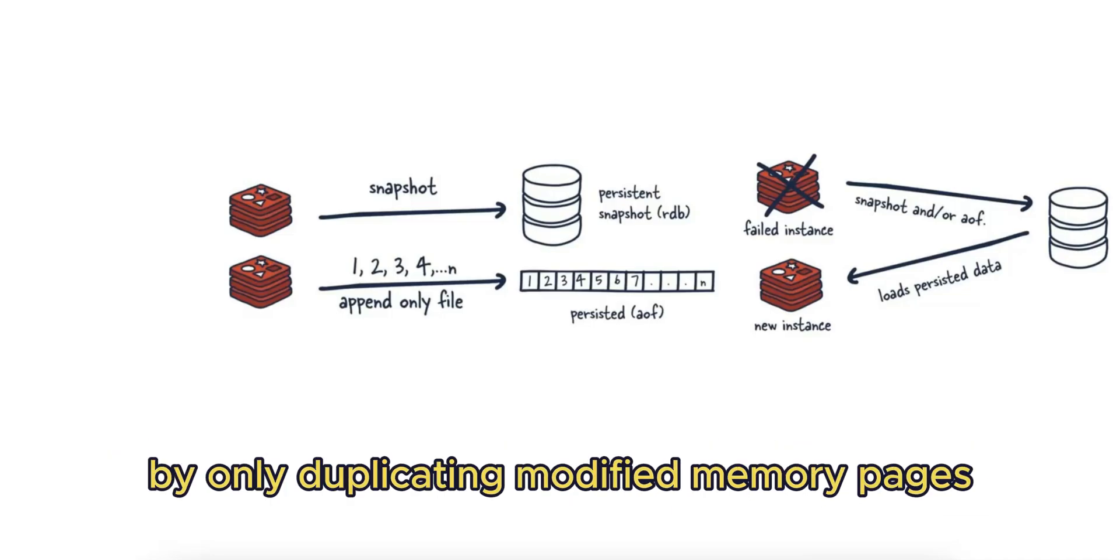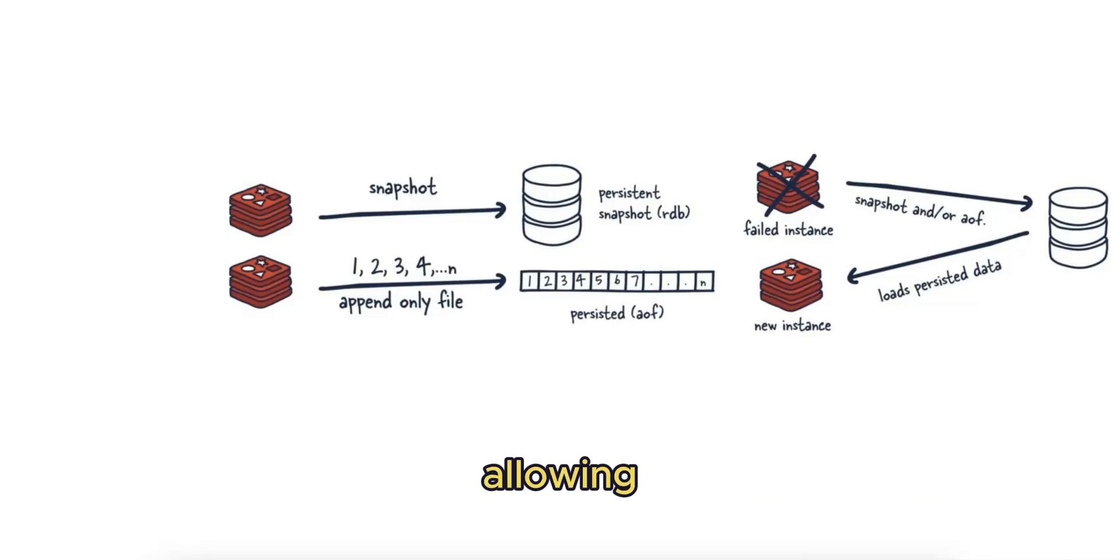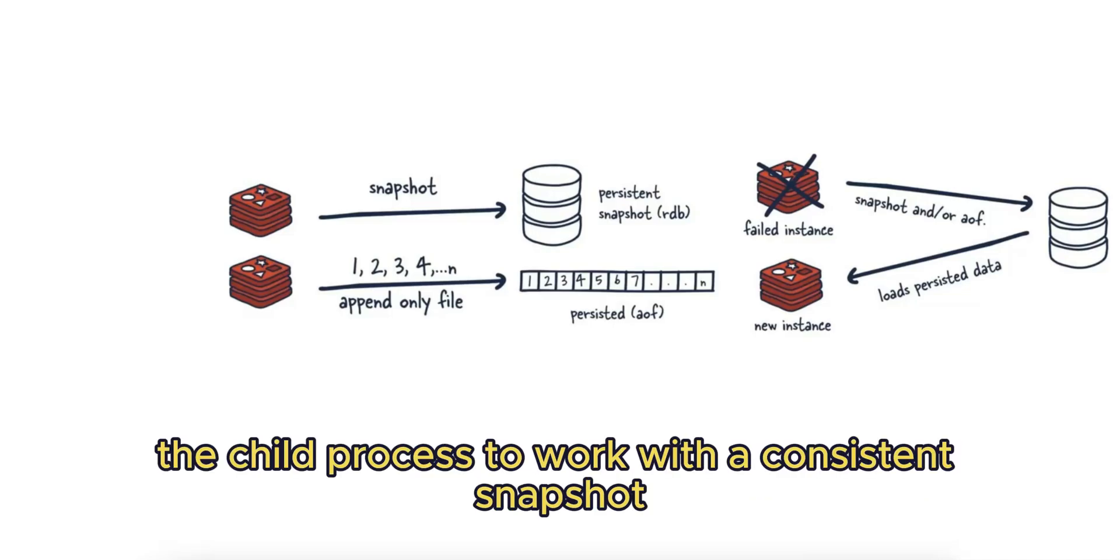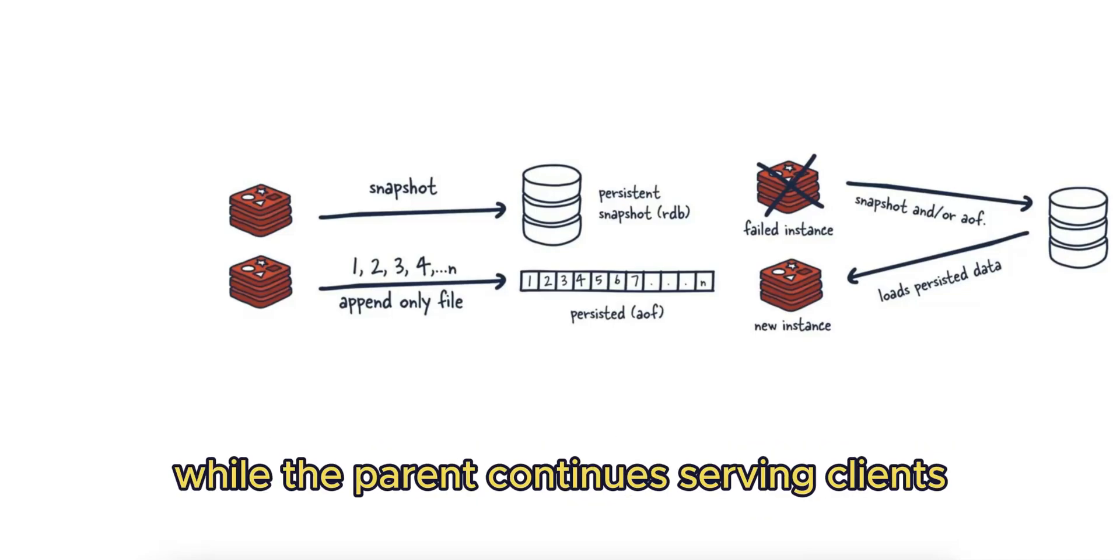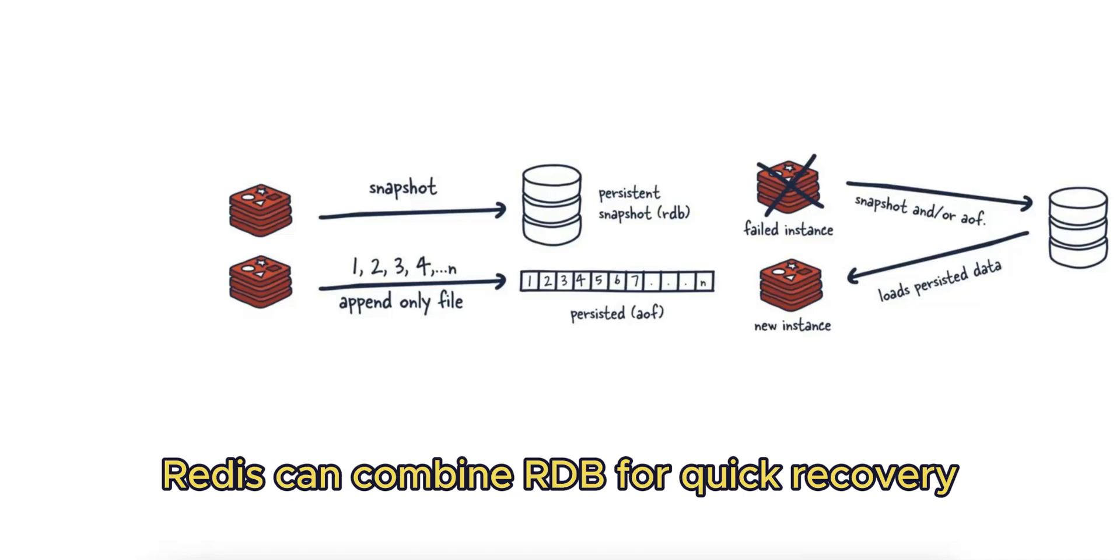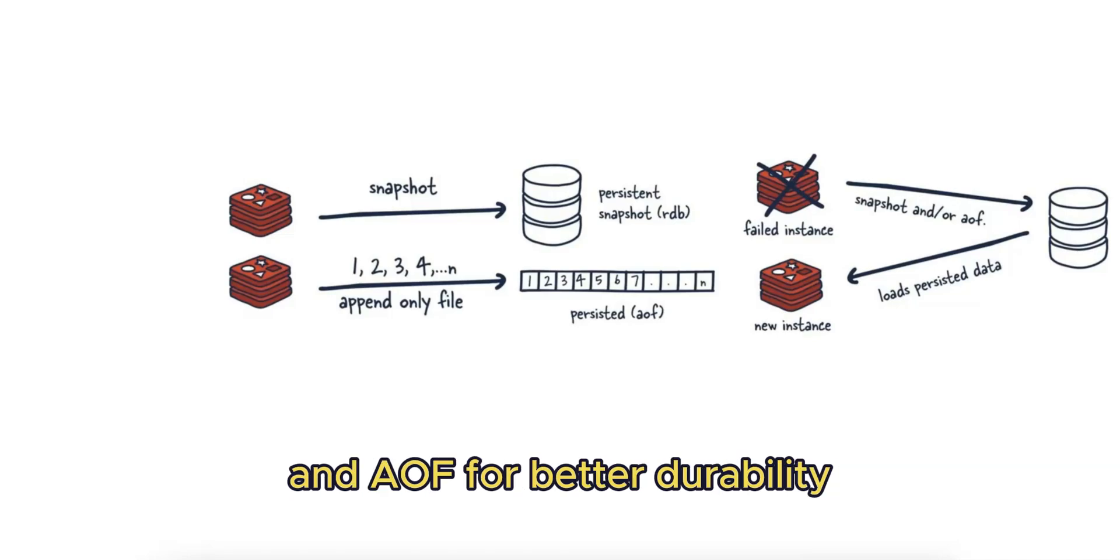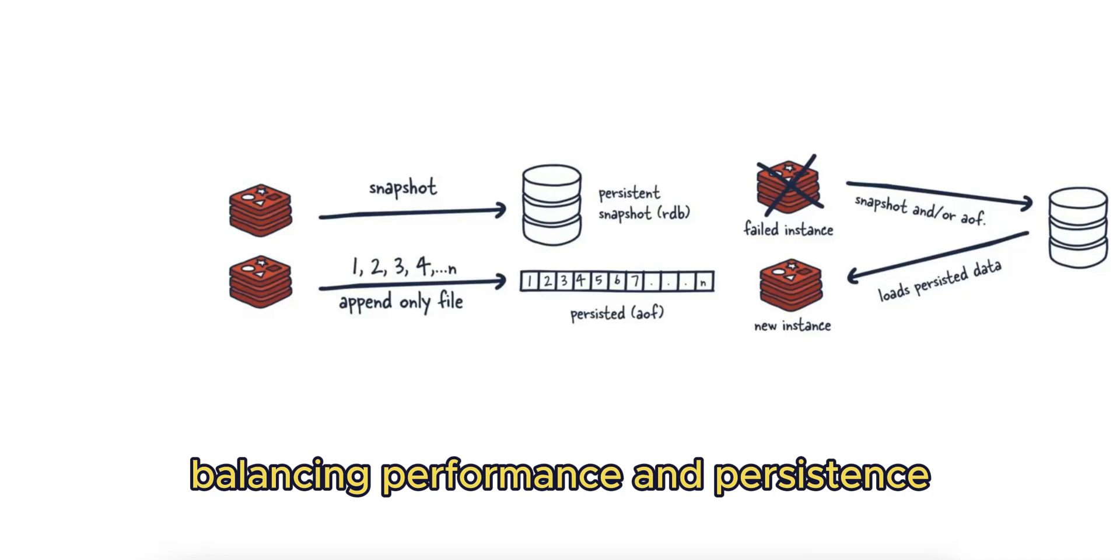Copy-on-write works by only duplicating modified memory pages, allowing the child process to work with a consistent snapshot while the parent continues serving clients. Redis can combine RDB for quick recovery and AOF for better durability, balancing performance and persistence.